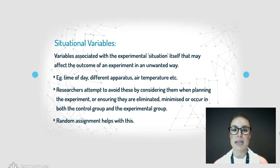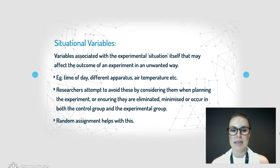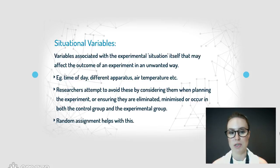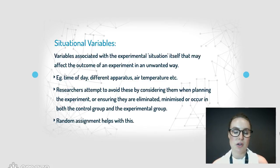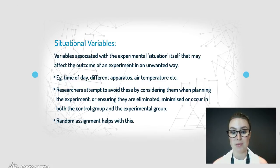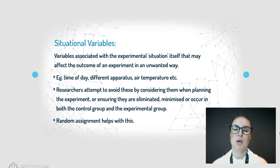Situational variables — like the hay versus hotel room situation mentioned earlier — relate to the actual experiment environment and how it might affect the results. These are unwanted, and could include things like the time of day that results are gathered, the apparatus used to get the measure, the air temperature, or the comfort levels of where participants are — anything to do with the surroundings that could impact the results. Researchers try to control this by carefully considering all possible factors when planning the experiment and ensuring they're either eliminated or minimized in both groups. Random assignment also helps with this.